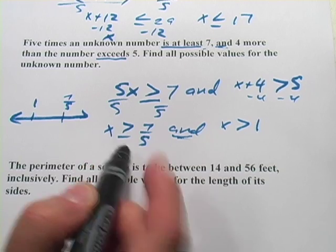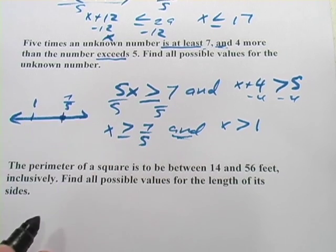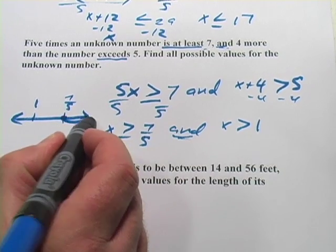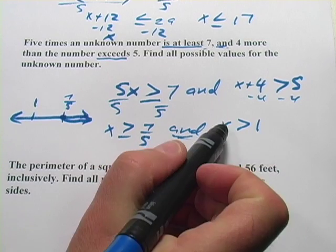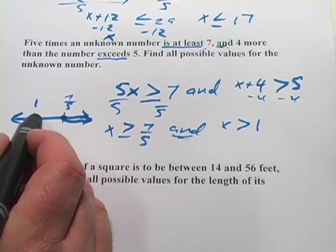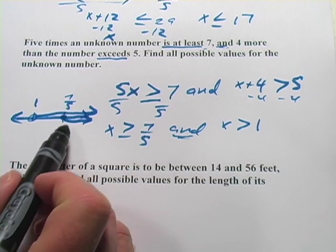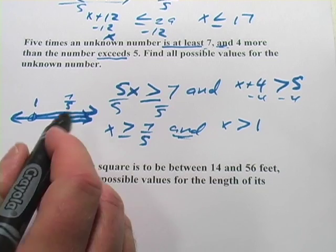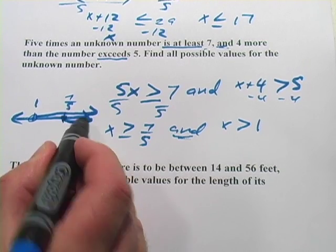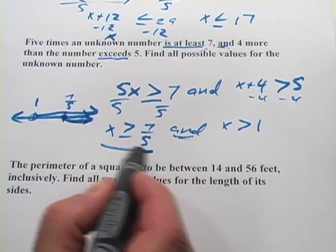Now, my two inequalities. One says x is greater than or equal to seven-fifths. So solid dot there and then going on that way. The other one says x is greater than one. So open circle and going on that way. Now, the place where they're both true is where they overlap. And they only overlap from here onward, which is actually exactly this.